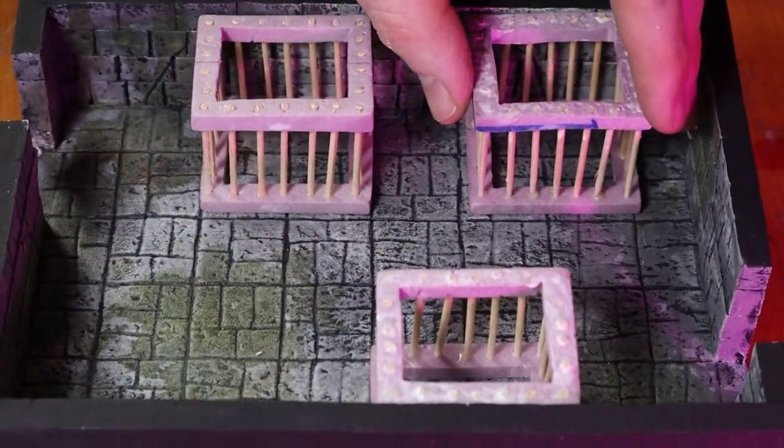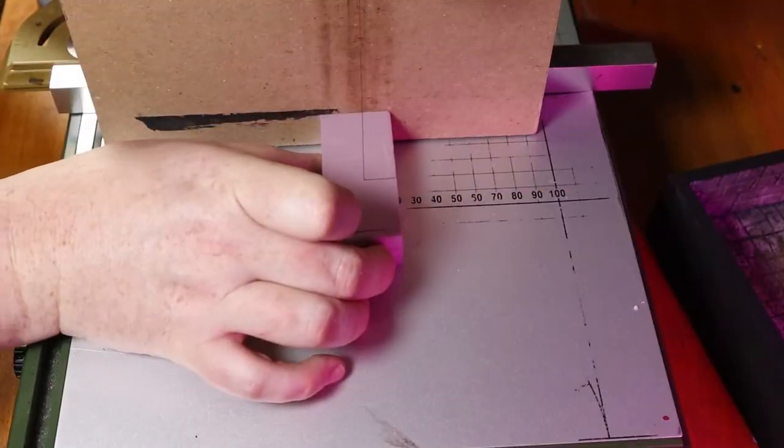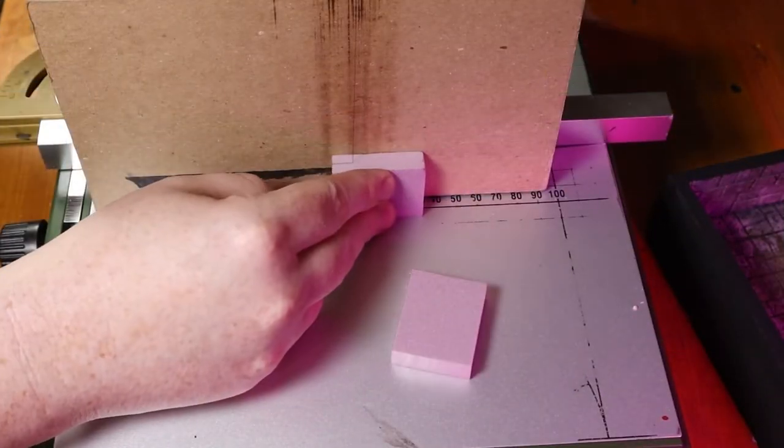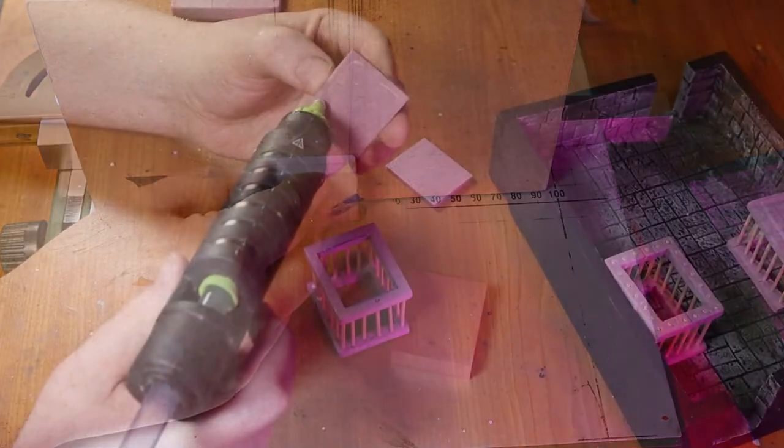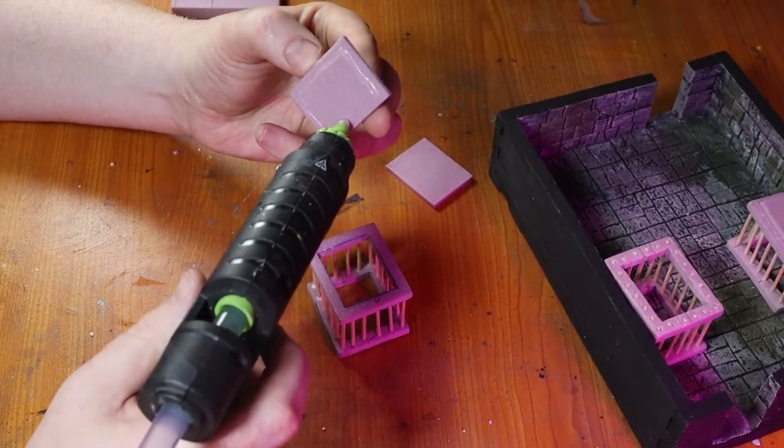Now we're going to add a little bit more to the top. I just cut out some more rectangles and cut them down to the width that I want, then I just hot glue those onto the top of each of the cages.